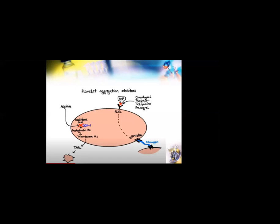Clopidogrel, on the other hand, inhibits the attachment of ADP (adenosine diphosphate) to the P2Y12 receptor, which in turn inhibits the activation of the GP2B3A receptor required for cross-linking of platelets to each other via fibrinogen. Essentially, clopidogrel prevents the cross-linking of platelets to each other via fibrinogen. These two drugs have different mechanisms of action, and in clinical practice we encounter patients taking both drugs. When patients take both aspirin and clopidogrel, it results in a synergistic effect — the combined effect is higher than when taken individually — so the risk of bleeding may be more in patients taking both drugs.